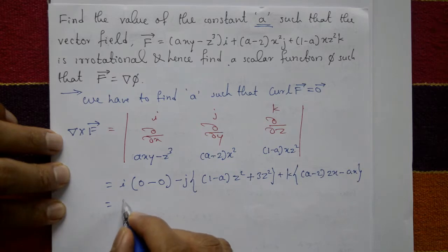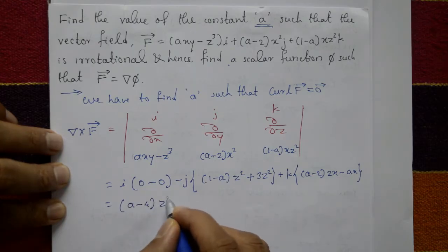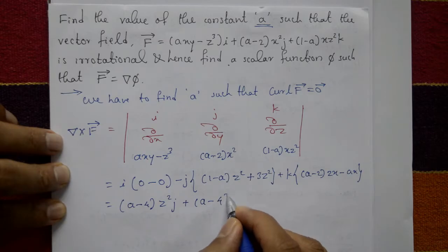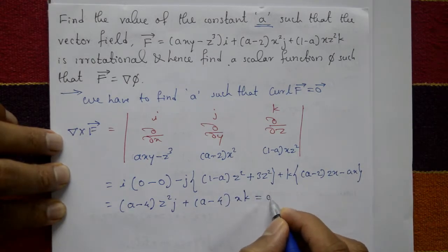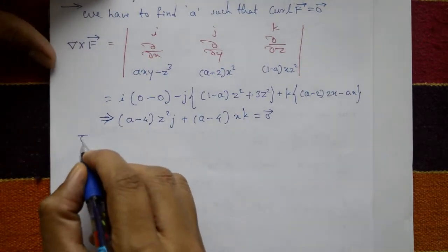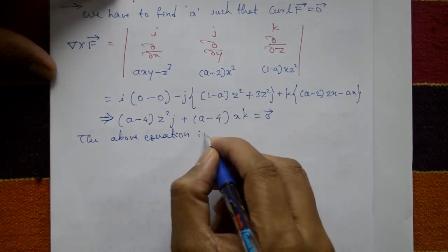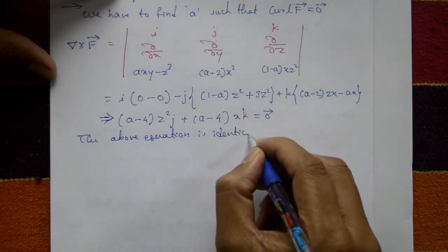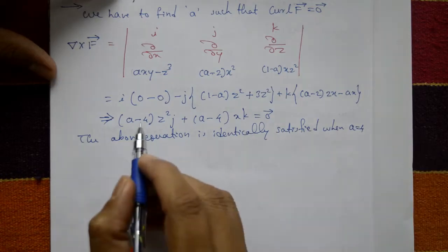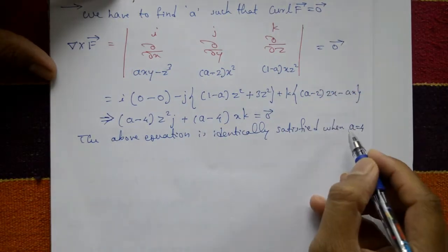Therefore curl f simplifies to (a minus 4)z squared times i plus (a minus 4)x times k equals zero. The above equation is identically satisfied when a equals 4. Substituting a equals 4, curl f equals zero is verified, so a equals 4.